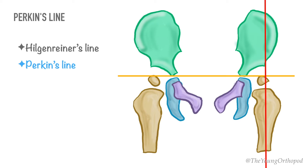In a normal hip, the femoral capital epiphysis and the medial beak of the femoral metaphysis lies in the lower medial quadrant produced by the intersection of Perkins and Hilgenreiner's lines.